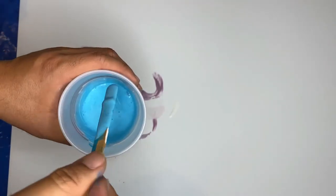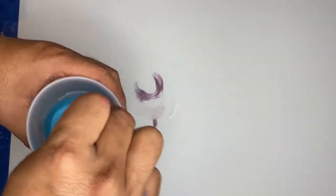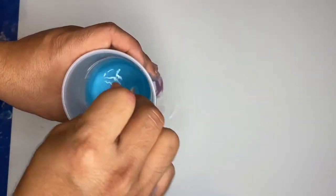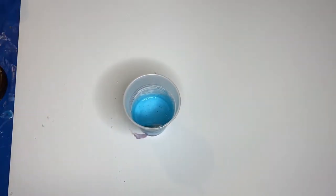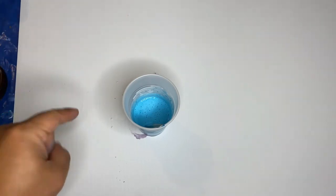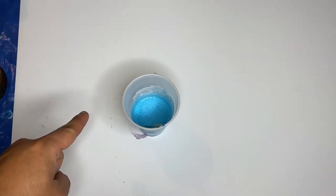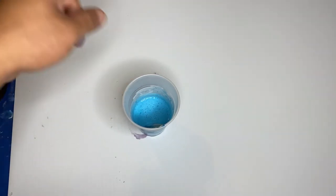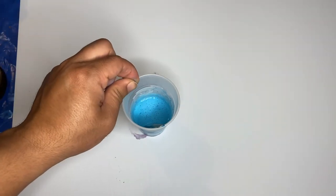There you have it guys. So that's how I prepare my pour paint. Just to recap: first you have to put the pouring medium and then you add the acrylic paint.